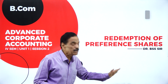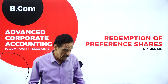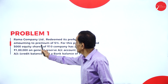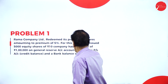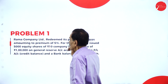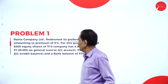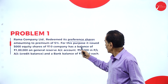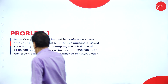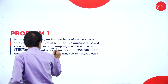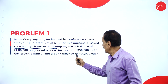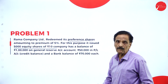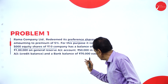How the shares will be redeemed? What are the procedures you have to follow? Shall we move on to problem number 1? Rama Company Limited redeemed its preference shares at a premium of 5%. For this purpose, 5000 equity shares of ₹10 each were issued. The company has a balance of 1 lakh on the general reserve account.